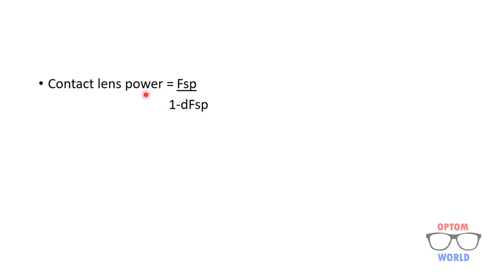The formula used to convert a spectacle prescription into a contact lens prescription is: contact lens power equals FSP (spectacle power) divided by 1 minus d·FSP, where d is the back vertex distance in meters and FSP is the spectacle power.